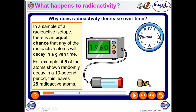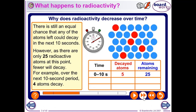Each isotope has a calculable probability of decaying in a certain amount of time, and that probability tells us how fast it's going to decay. Some have a very high probability and decay quickly; others have a very low probability and take a lot more time. For example, here's our sample of 30 atoms. In a 10-second period, 5 of those atoms decay, leaving only 25. Each of them having the same probability of decaying means I'm going to get fewer decays happening as time goes by.